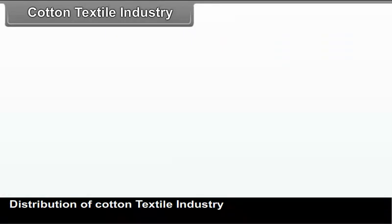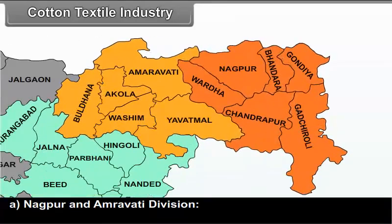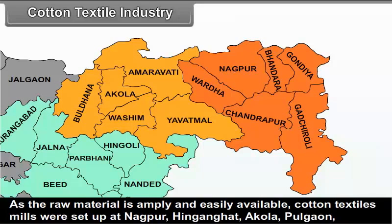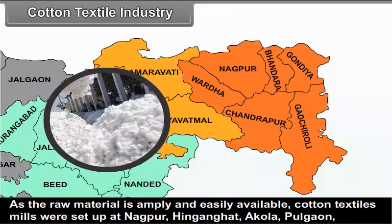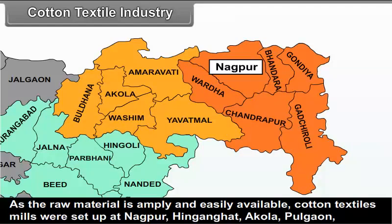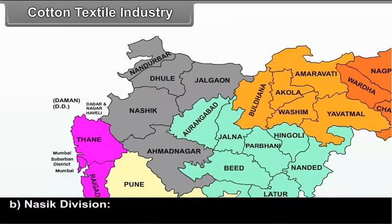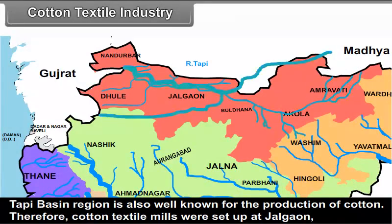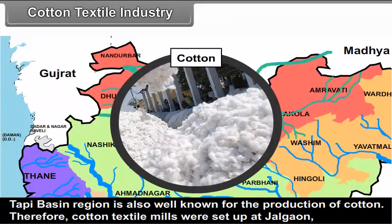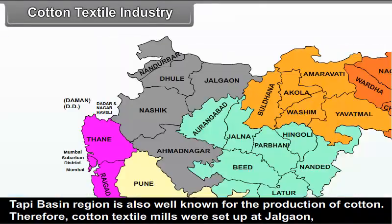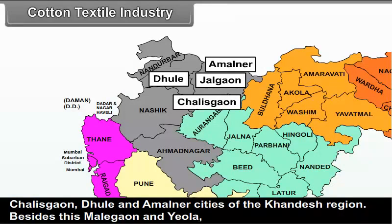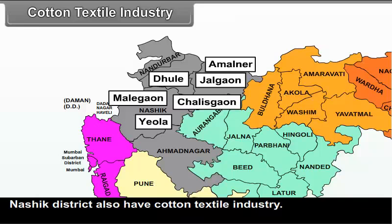Distribution of cotton textile industry: In Nagpur and Amravati division, as the raw material is amply available, cotton textile mills were set up at Nagpur, Hinganghat, Akola, Pulgao, Badnera and Achalpur cities of the Vidarbha region. In Nasik division, the Tapi Basin region is well known for cotton production, so mills were set up at Jalgaon, Chalisgaon, Dhule and Amalner cities of the Khandesh region. Besides this, Malegaon and Yeola in Nasik district also have cotton textile industry.